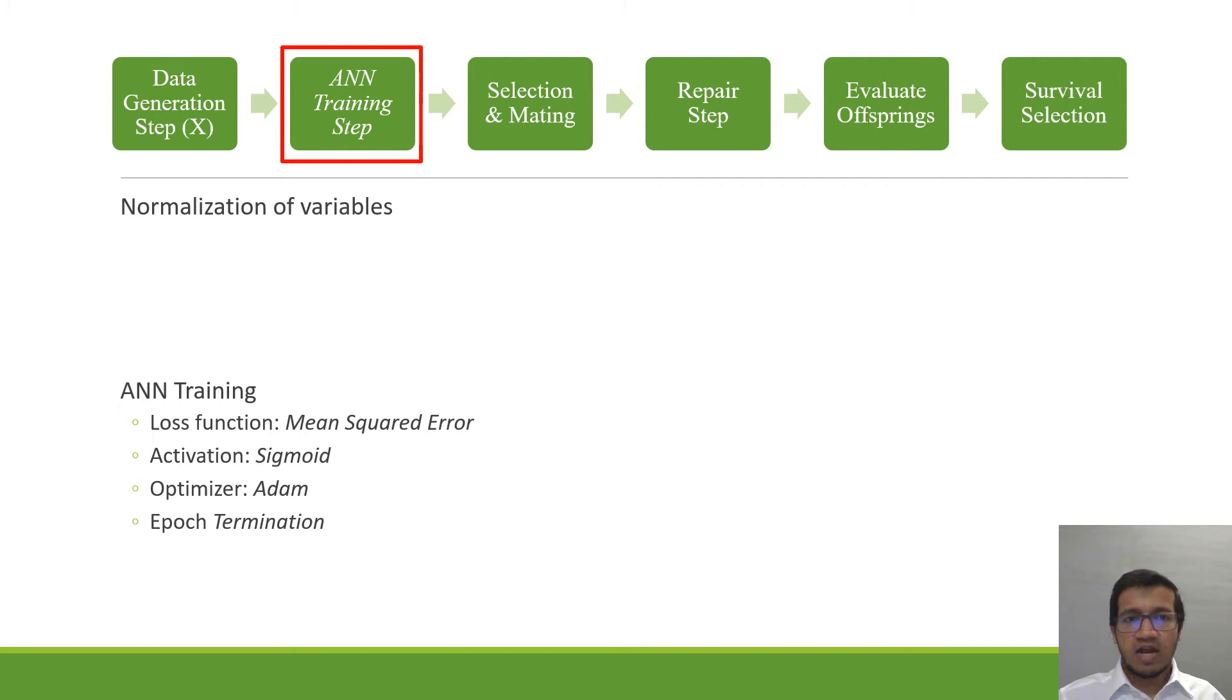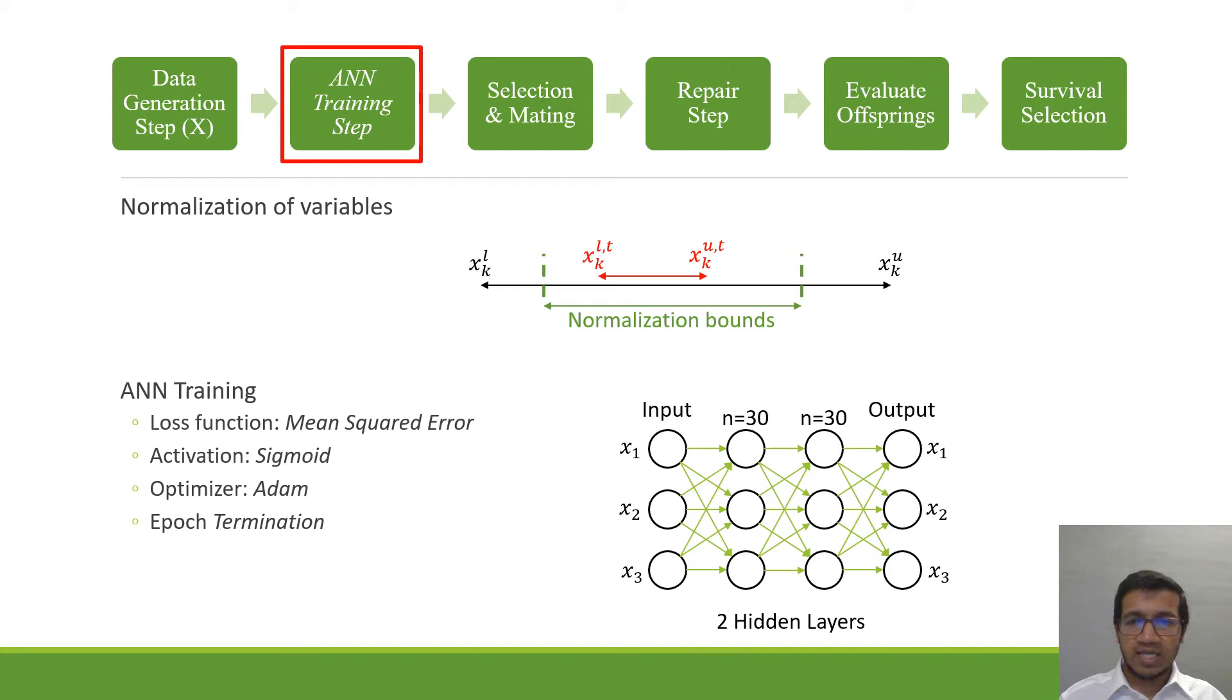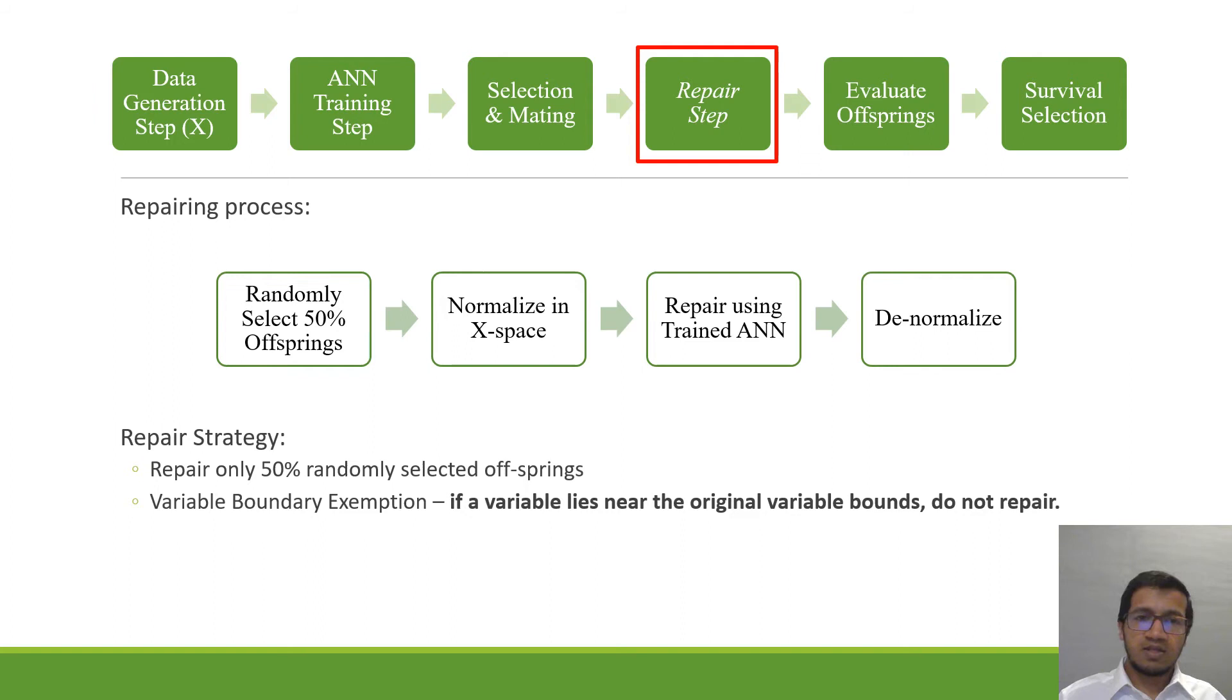So now our data set has the variable vectors which are to be normalized before they can go into the ANN training, and then we train them using a two layered ANN, that is it has two hidden layers then one input and one output layer. The input and output layer neurons have to be equal to the number of variables that are there in the problem statement, and for this study the hidden layer neurons have been fixed to 30 in each layer.